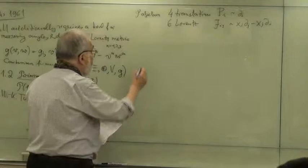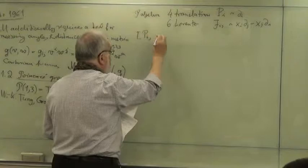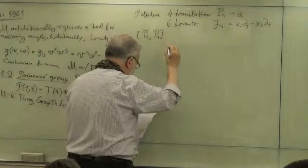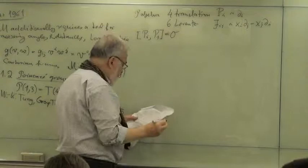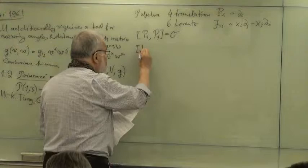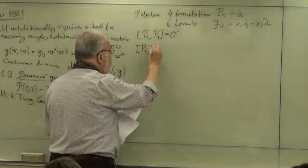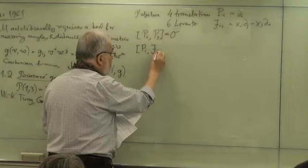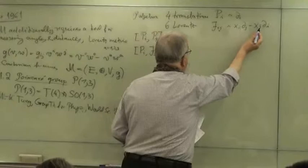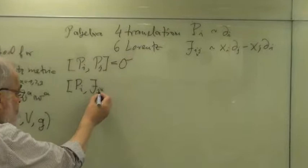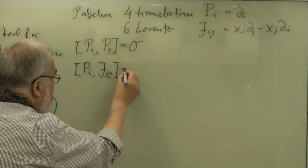And such a rotation by xi times partial j minus xj partial i. If you play with that, you can easily recover the Poincaré algebra. The commutator of Pi with Pj equals zero. The translations commute. They are abelian, an abelian subgroup of the Poincaré group. But this is the semi-direct structure.